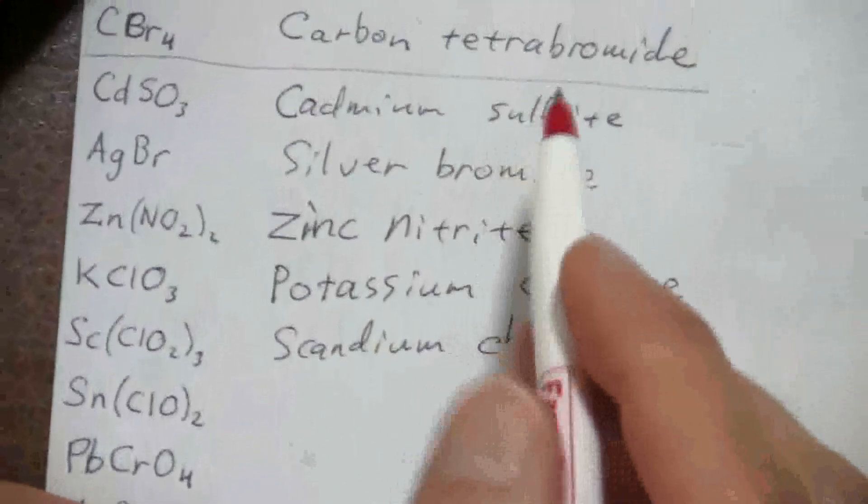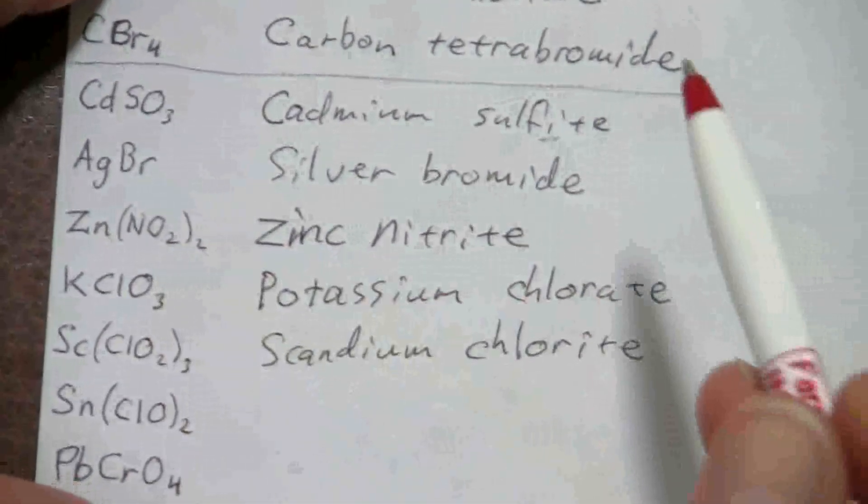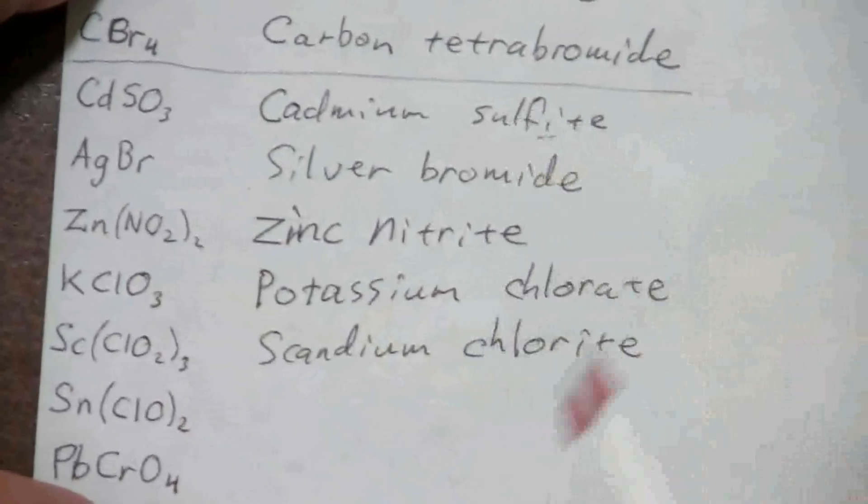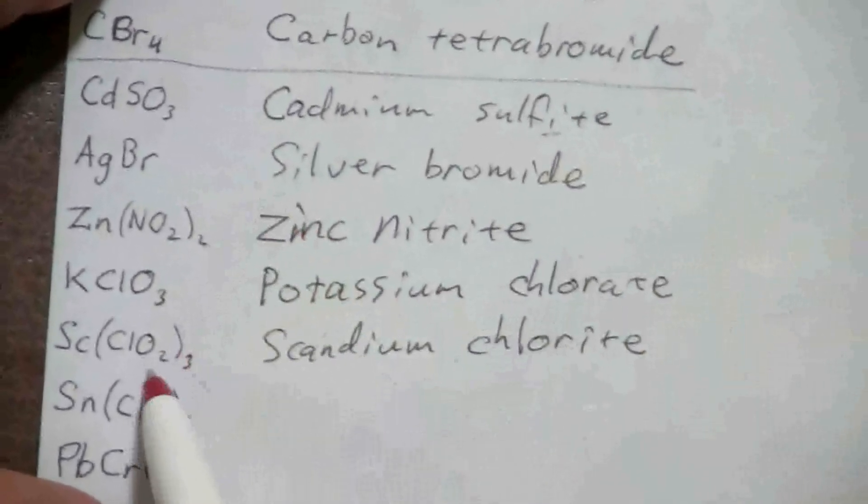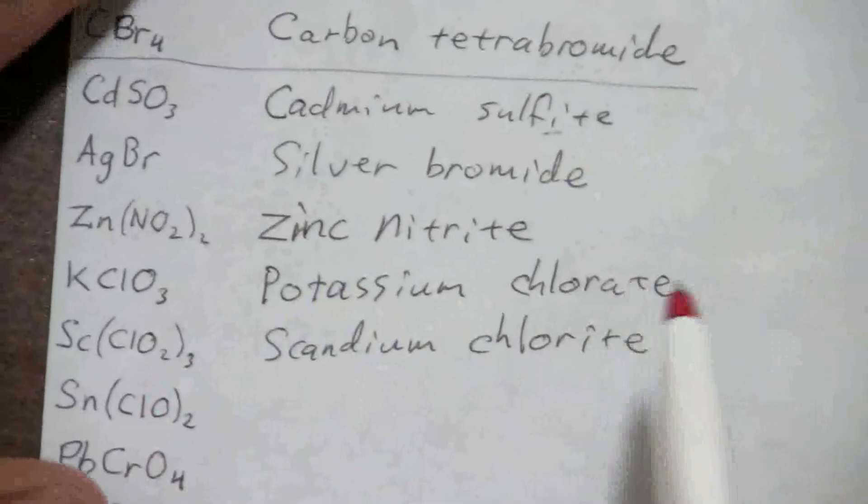So chlorate, just like before with nitrate, nitrite has one less. Sulfate, sulfite has one less than the sulfate. Chlorite has one less than the chlorate.